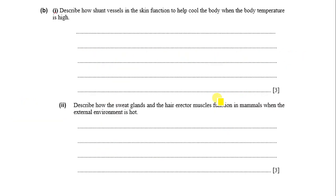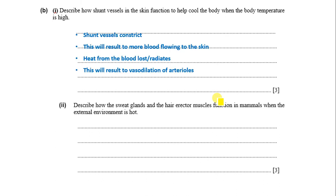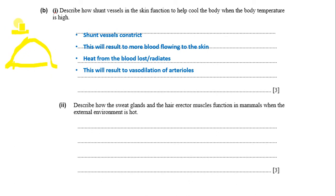Name one other factor in the human body controlled by homeostasis: temperature. Describe how shunt vessels in the skin function to cool the body when body temperature is high. Shunt vessels contract, resulting in more blood flowing to the skin. Heat from the blood is radiated out of the skin, resulting in vasodilation of arterioles. Shunt vessels connect arteries directly to veins without passing through capillaries, so when they contract, more blood flows to skin capillaries and more heat is lost by radiation.